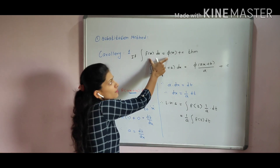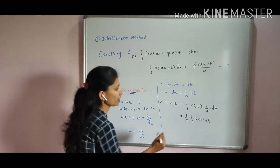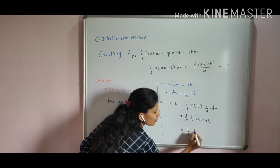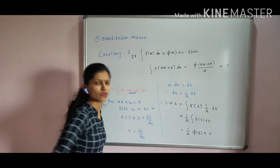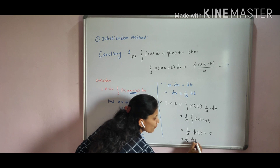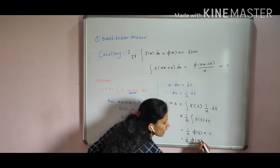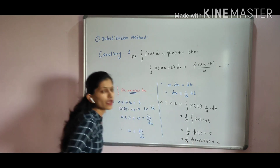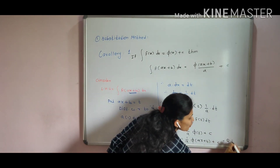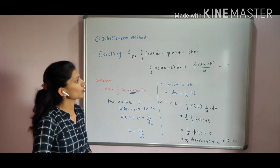We now have 1 upon a times integration of f of t into dt. Given that the integration of f of x equals phi of x, we know the integration of f of t equals phi of t. So the result is equal to 1 upon a times phi of t plus c. By back substitution, replacing t with ax plus b, we get 1 upon a times phi of ax plus b plus c. So the first corollary is complete.